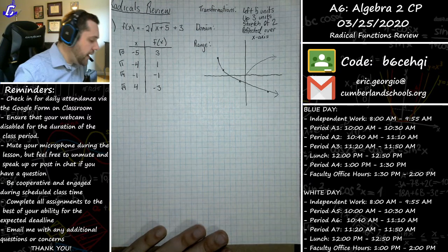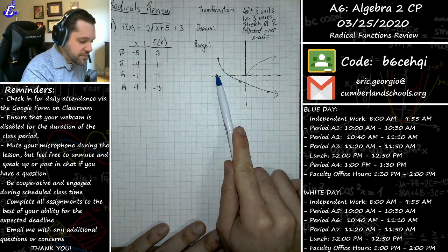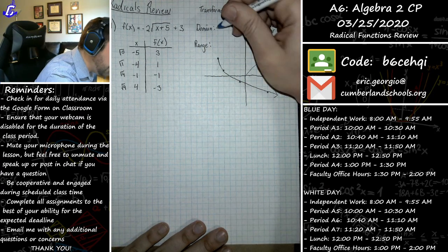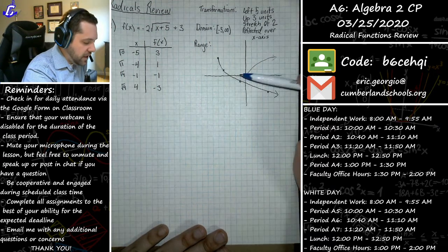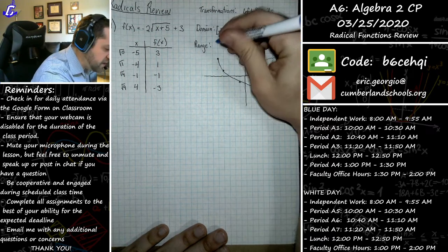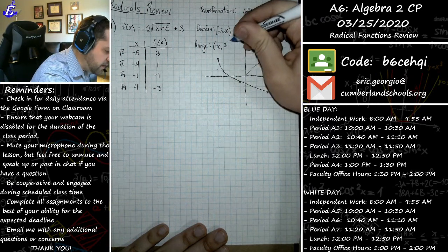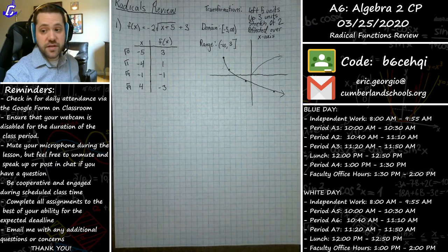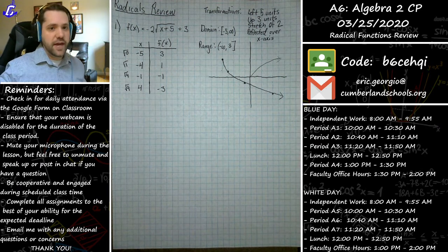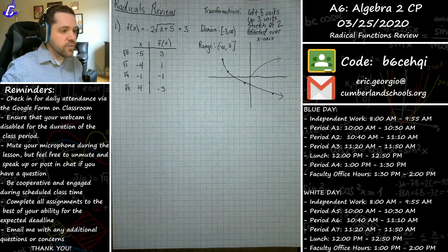The domain of this function is the space the graph occupies from left to right. The furthest left it goes is negative five and it continues to the right forever, so the domain is [-5, ∞). The range — talking vertically — it goes down forever to negative infinity but only up to positive three, so the range is (-∞, 3].